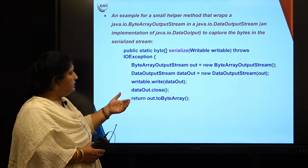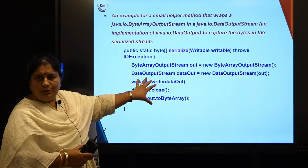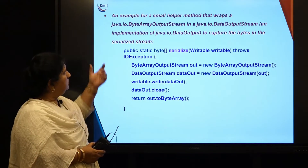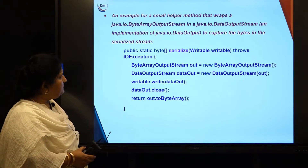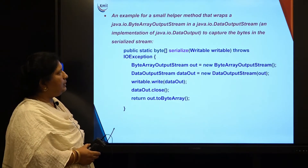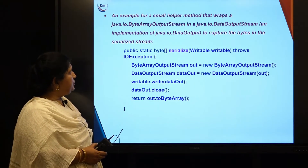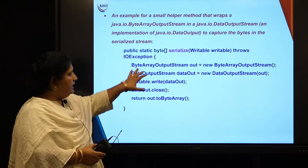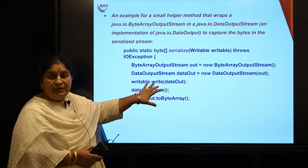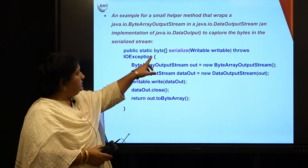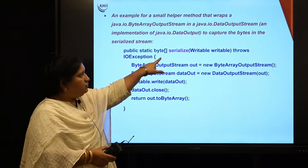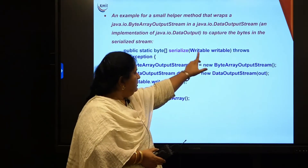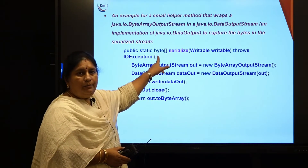There are some helper methods. The serialization helper wraps a ByteArrayOutputStream in a Java DataOutputStream to capture the bytes in the serialized stream — converting an object into a byte stream. The method returns a byte array and takes a Writable object. It calls the writable's write method, then closes the stream and returns the byte array.